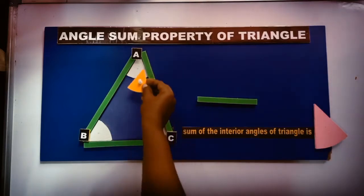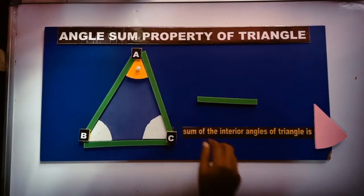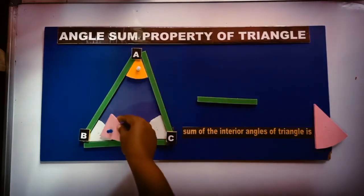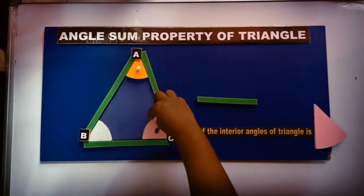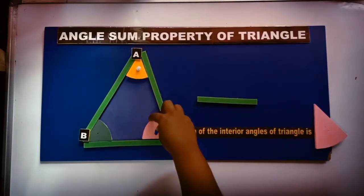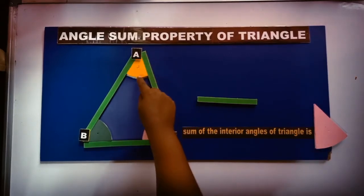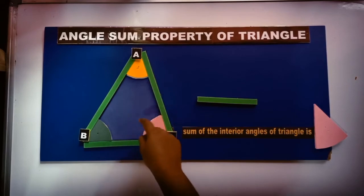I have the copies of angles that this is angle A, angle C, then angle B. I have taken the copies of three angles, three interior angles of a triangle: angle A, angle B and angle C.